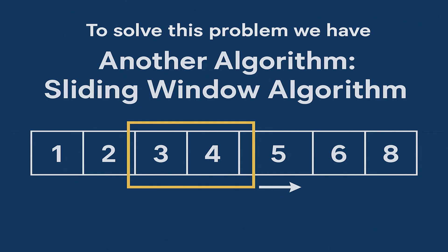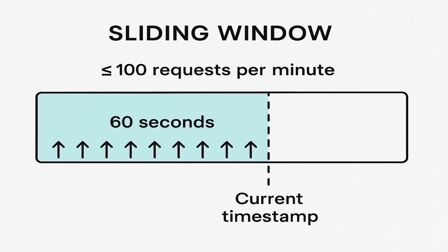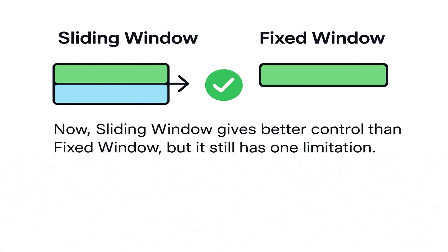But there is one problem: if a user sends 100 requests at 10:00:59 and another 100 at 10:01:01, that's 200 requests in just two seconds, which may still overload the system. To solve this, we have the sliding window algorithm. Instead of resetting the counter at the start of every fixed window, it calculates the limit using a sliding time window based on the current timestamp. If the limit is 100 requests per minute, it looks back at least 60 seconds — giving smoother control over the request rate.